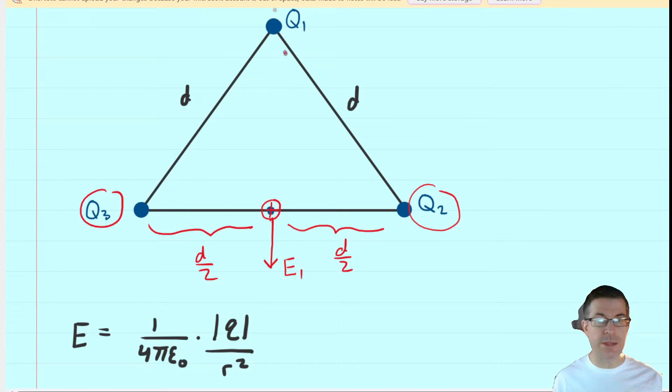Now, when we say distance, we're going to mean the distance from Q1 all the way to that midpoint. So that distance right there is what we're going to need. We're going to call that r. We're going to end up looking for that. And in fact, we could do that now.